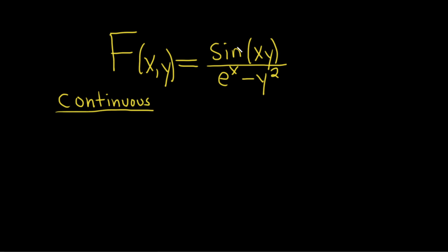The sine function itself is continuous everywhere so there are no issues. Either the x is continuous and y squared is continuous, and if you subtract two continuous functions you get a continuous function. So both the numerator and denominator of this function are continuous.